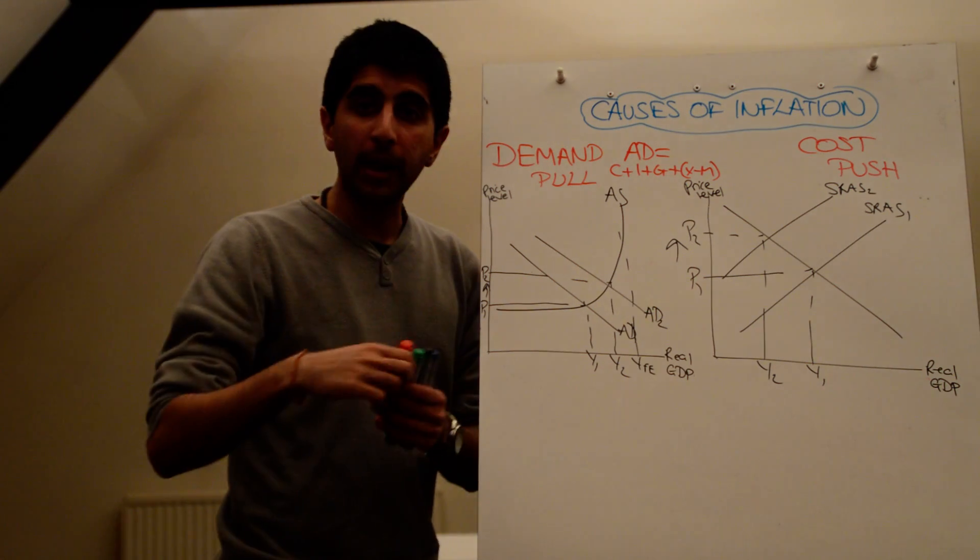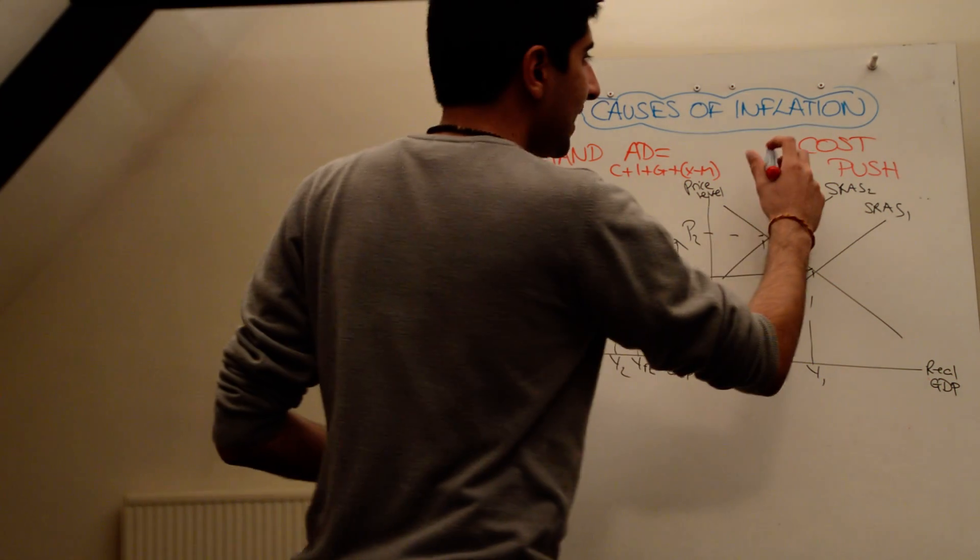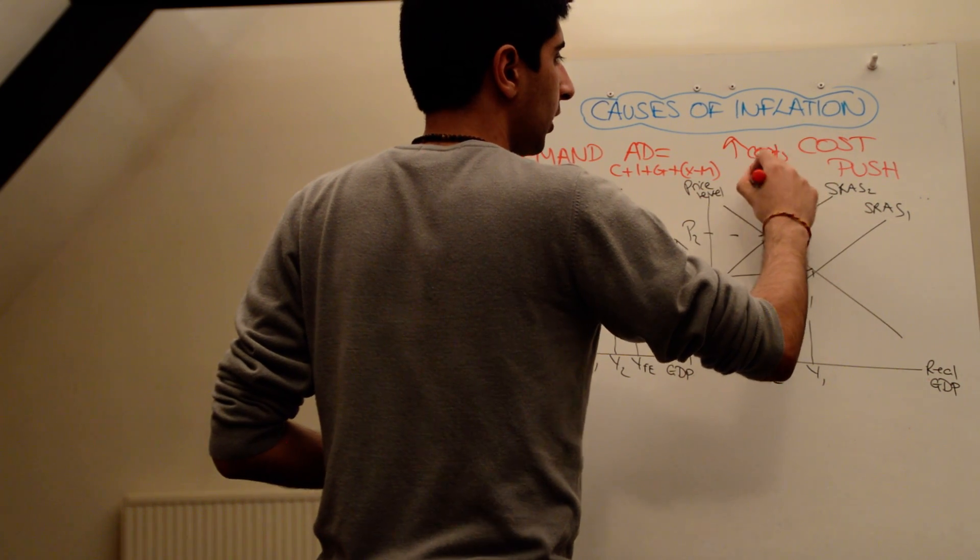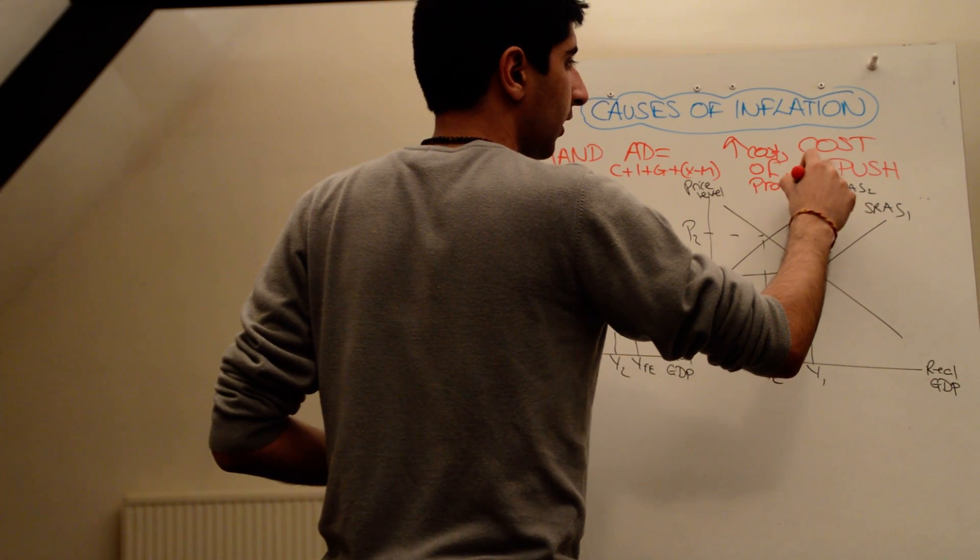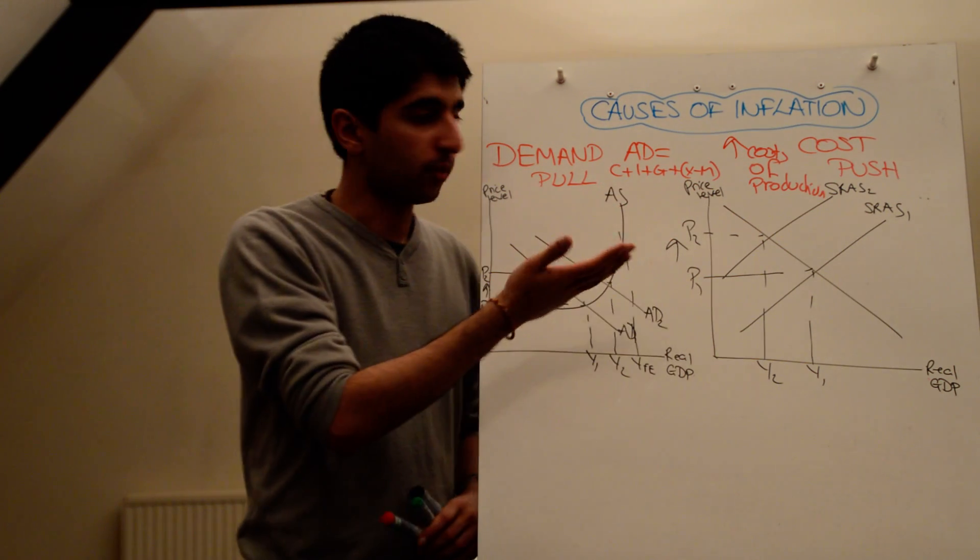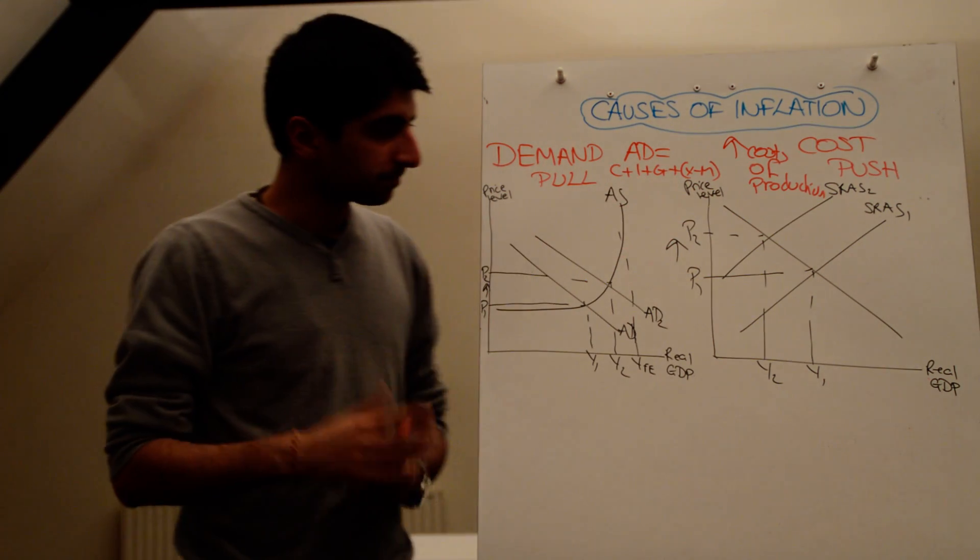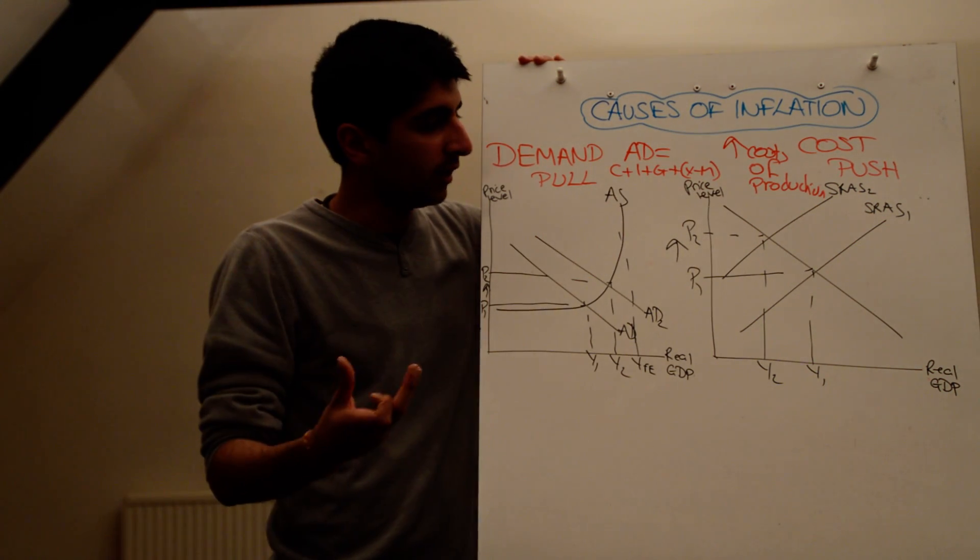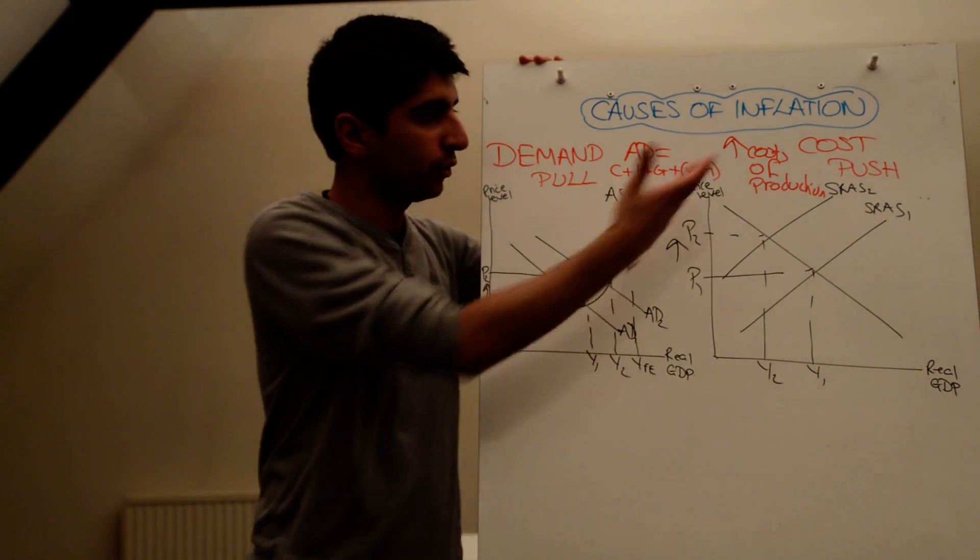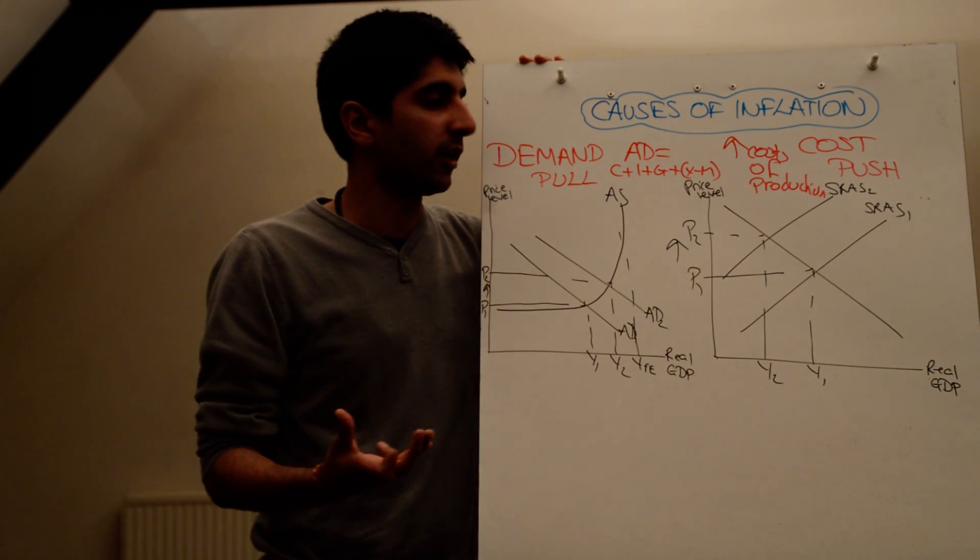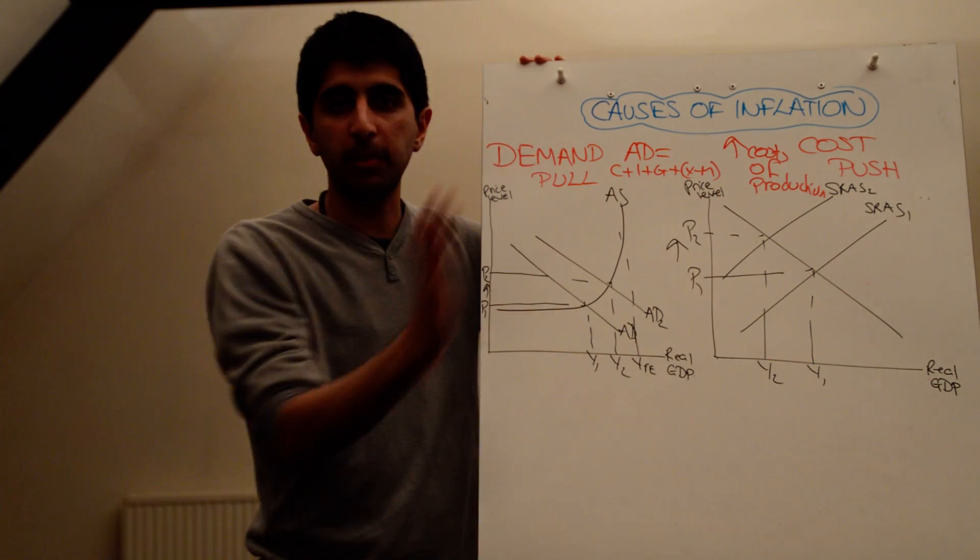So cost push inflation is all about the cost of production. So any increase in the costs of production would shift the aggregate supply curve to the left, the short run aggregate supply curve to the left, and cause an increase in prices. The reason very simply now is that as firms face an increase in their costs of production, they're more likely to pass on these extra costs via higher prices, thus causing cost push inflation pressure. Okay? So that's how you explain that.